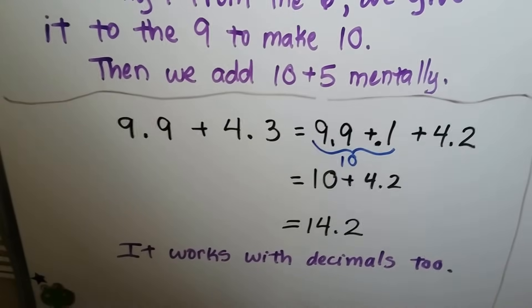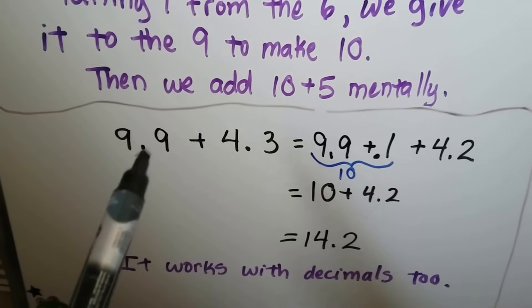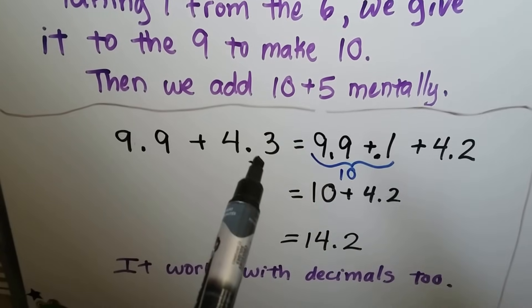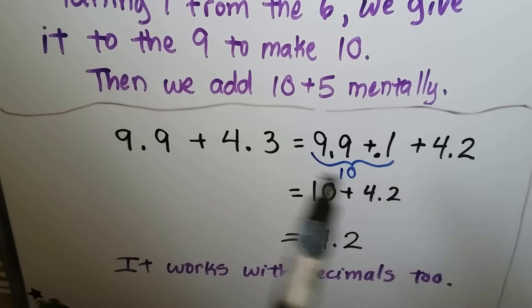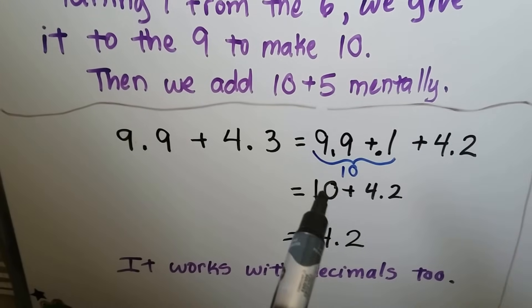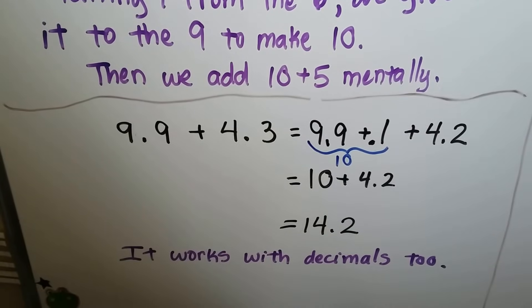And we can do this with decimals too. If we have 9.9 plus 4.3, all this needs is a little 0.1, a little 1 tenth to become a 10. We can take 1 tenth away from the 4.3 and make it 4.2, and this now becomes a 10, and mentally we can add 10 plus 4 plus 2. We get 14.2.